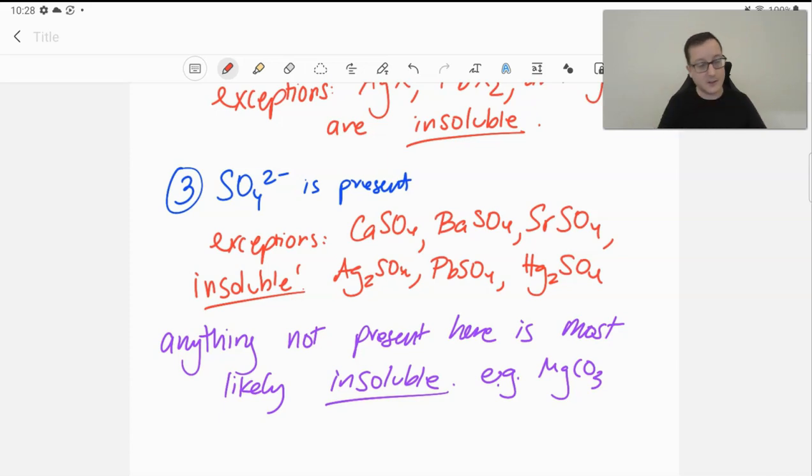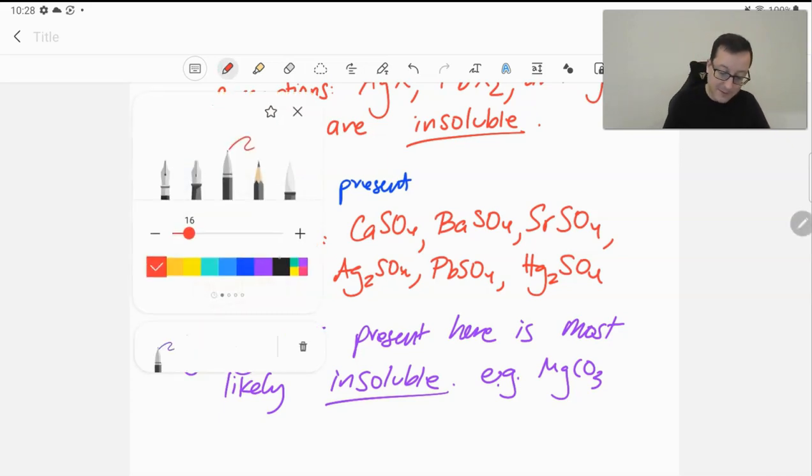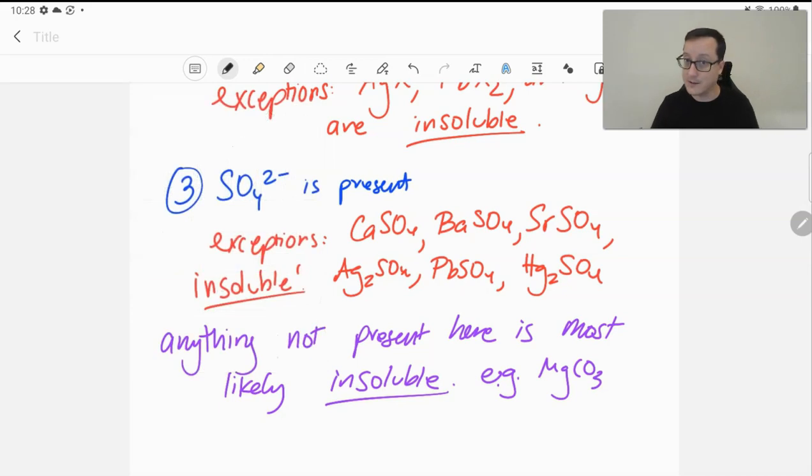Some places might say things are slightly soluble and blah, blah, blah. Let's not worry about that. If it's not covered by one of these three rules, assume it is insoluble. So we're going to see that this is going to be very important in predicting the products of reactants.